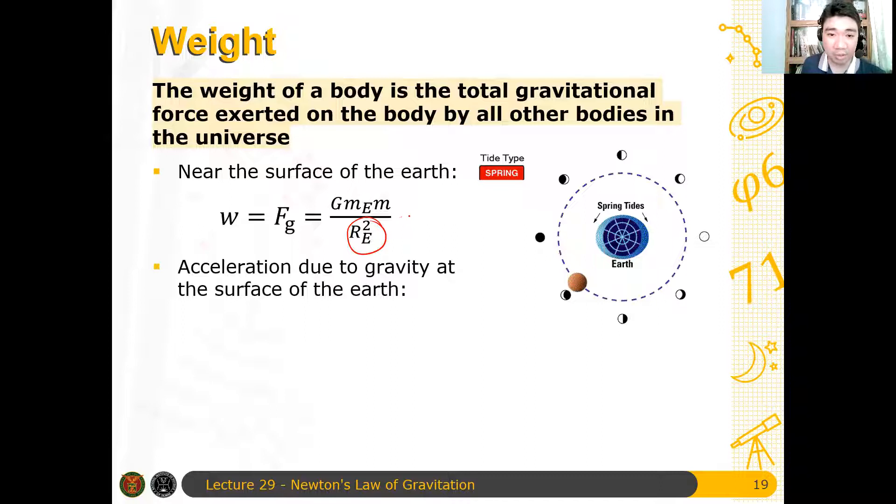So this is just equal to m times g, and therefore the m will cancel. And hence, the acceleration due to gravity, small g, can be obtained from the universal gravitational constant, capital G. And hence, you get g equals capital G, m_e over r_e squared.